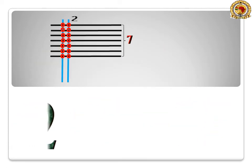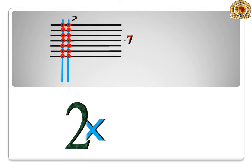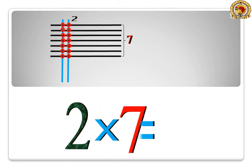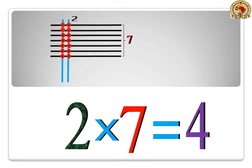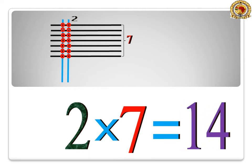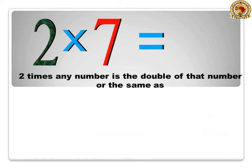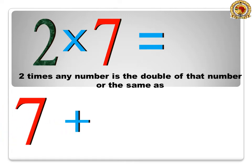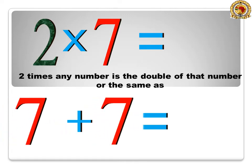2 times 7 is equal to 14. 2 times any number is the double of that number, or the same as 7 plus 7 is equal to 14.